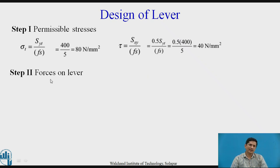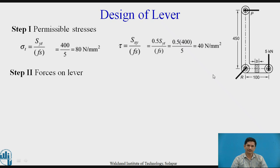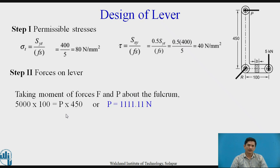The next step is to calculate the forces on the lever. It is a very important step because with the known forces, we can then calculate what are the resultant forces acting at the fulcrum. Now the force P, the load is given to us, which is acting at a length of 100 mm from the fulcrum. The other arm is 450 mm long. We can take the moment about point R, this point, fulcrum. Force F and P, we have this force is F, this force is P.